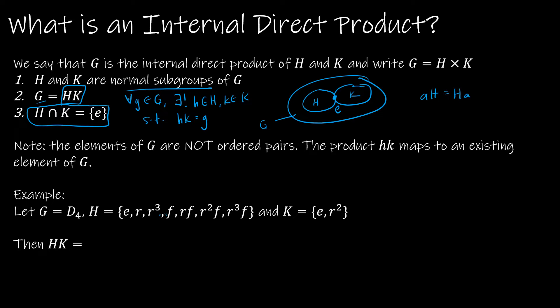Now, I want to note before we look at an example that the elements of G are not ordered pairs. So when we did the external direct product, we had H cross K gave us some element that looked like (h, k). But if you do H cross K as an internal direct product, you're just going to get whatever h times k results in.